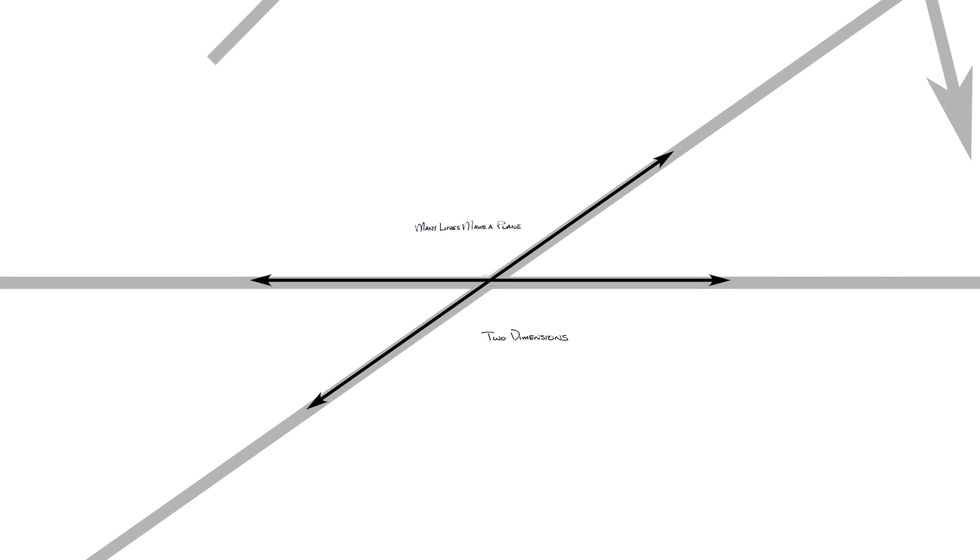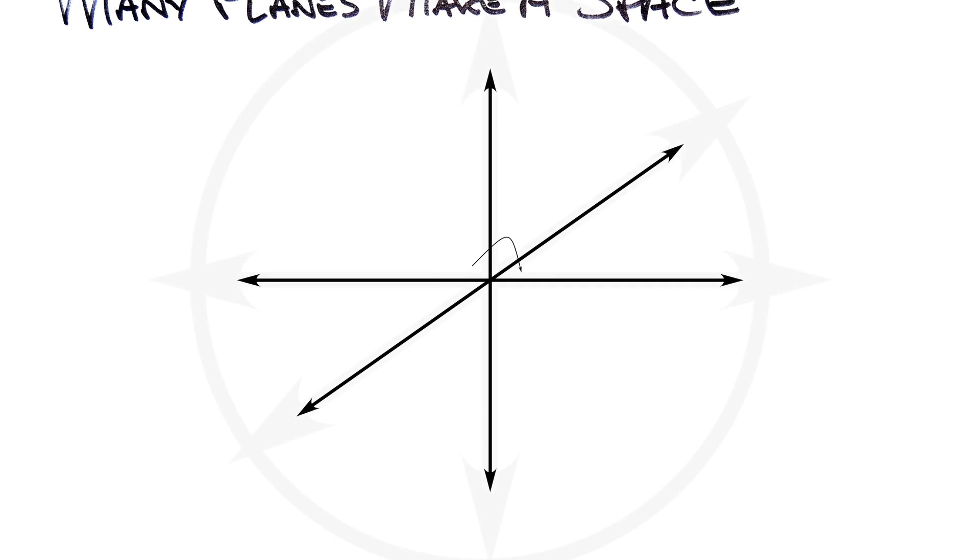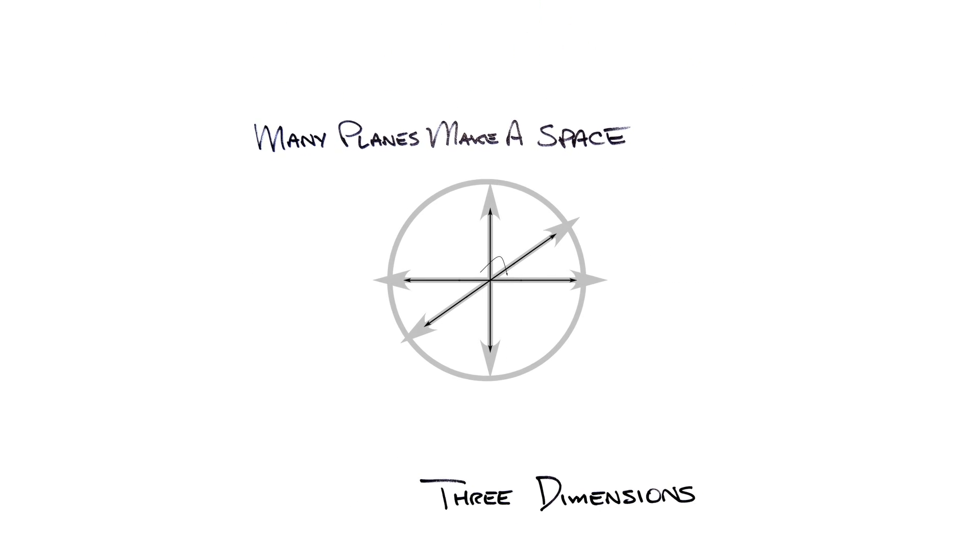From the second dimension, the third dimension is what you would jump through to instantaneously move from one position to another, or to move to a completely different two-dimensional plane. Many planes make a space, three dimensions.